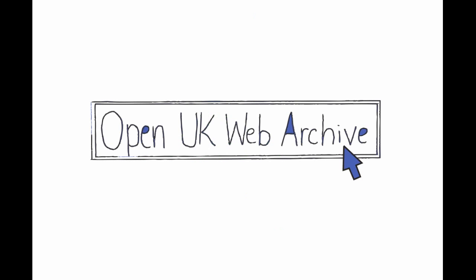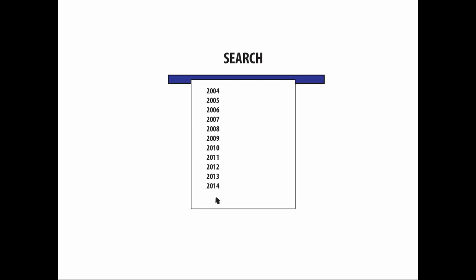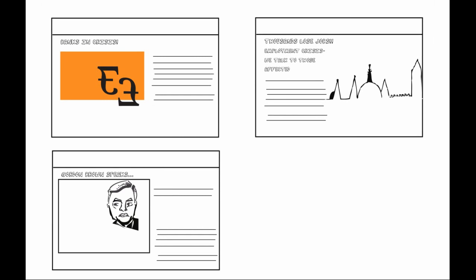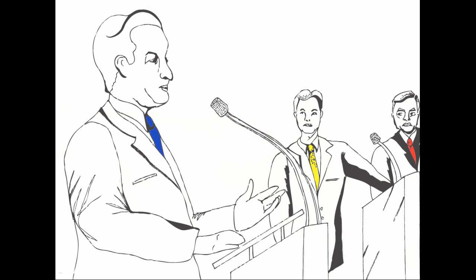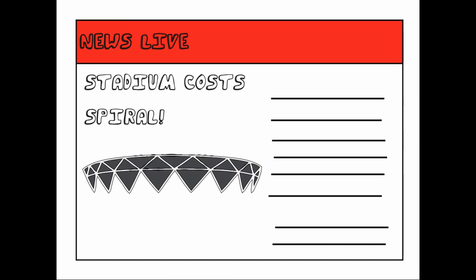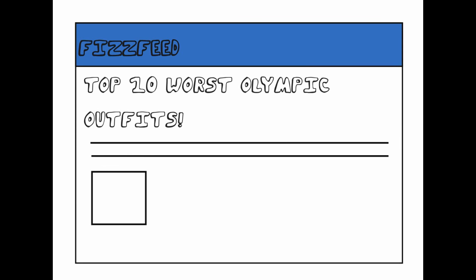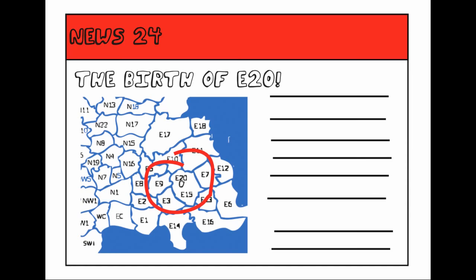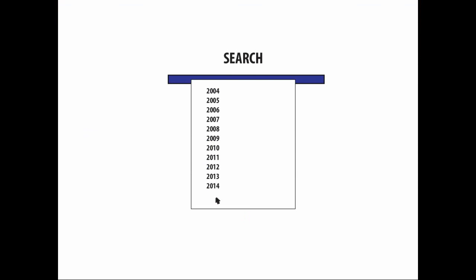Finally, there is the Open UK Web Archive. This is a curated set of websites focused around themes like the Credit Crunch, the General Elections of 2005 and 2010, or the London Olympics. Because it is carefully curated material with more contextual information, this might be the best place to start using a web archive. Its coverage begins in 2004 and continues right up to the present.